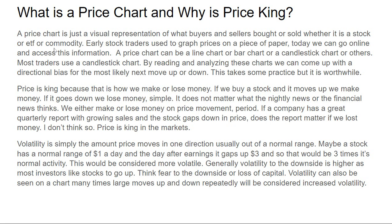Price is king in the markets. Volatility is simply the amount price moves in one direction, usually outside a normal range. For example, a stock may have a normal range of $1 a day, but the day after earnings it gaps up $3 — that would be three times its normal activity, which would be considered more volatile. Generally, volatility to the downside is higher as most investors fear loss of capital. Volatility can also be seen on a chart — large moves up and down repeatedly indicate increased volatility.